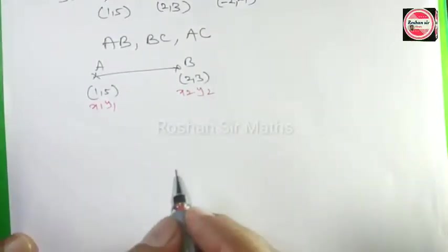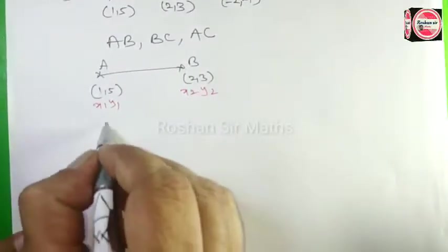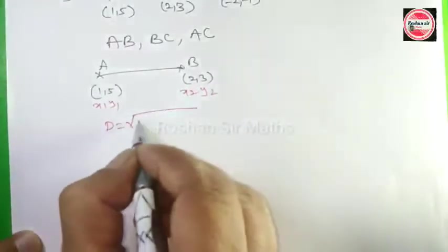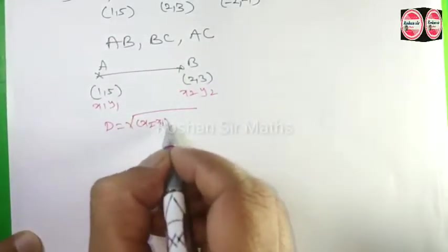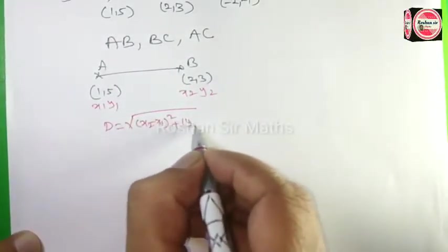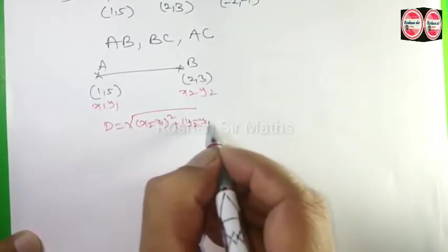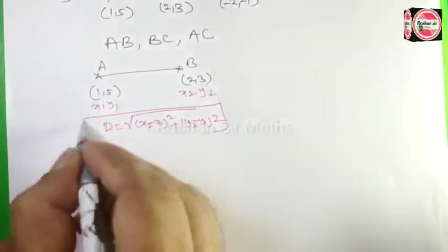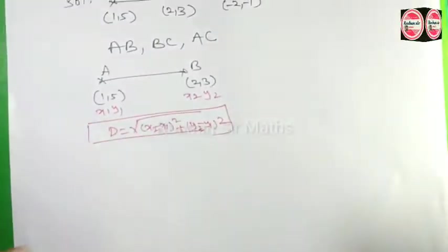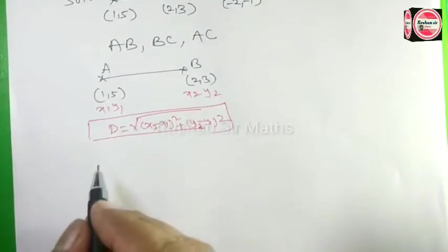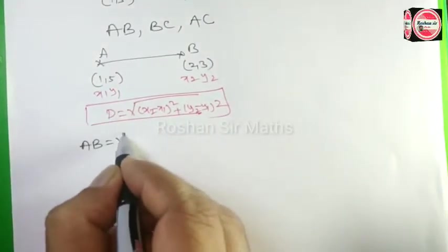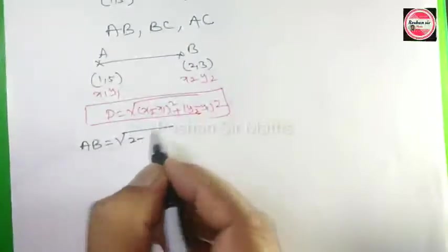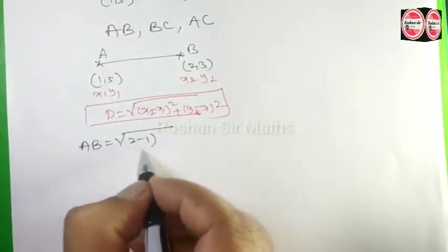The distance formula we have is: distance = √[(x2 - x1)² + (y2 - y1)²]. Using this formula, AB = √[(2 - 1)² + ...]where x2 = 2 and x1 = 1.